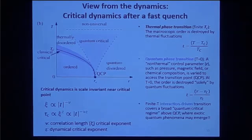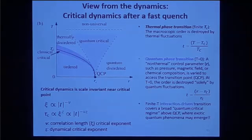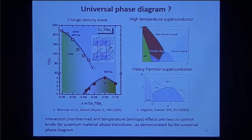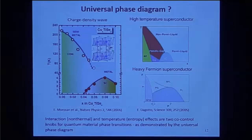At zero temperature, people talk about quantum phase transitions. But most materials have ordered phases at finite temperature. By applying doping or pressure, you can drive a system from order to disorder or from one order to another. Those are nonetheless interaction-driven. A quantum material therefore has two control parameters: temperature and interaction. You can drive phase transitions with temperature change, or with chemical doping — so both temperature and interaction can drive phase transitions.